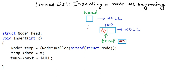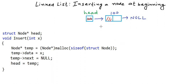Now if we want to insert this node at the beginning of the list, there can be two scenarios. One is when the list is empty. In that case, the only thing we need to do is point head to this particular node instead of pointing to null. So we write 'head = temp', and the value in head will now be address 100. After we insert the first node, let's see what we need to do to insert a node at the beginning when the list is not empty.